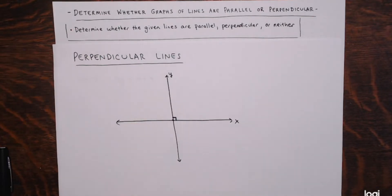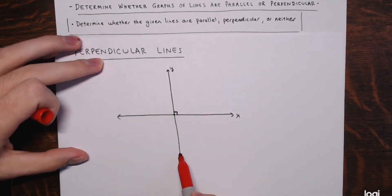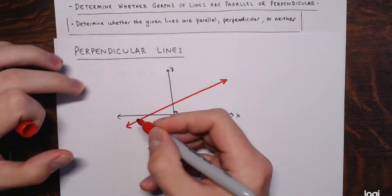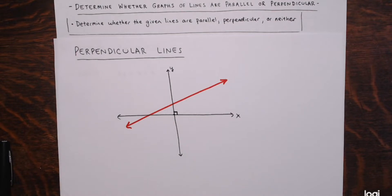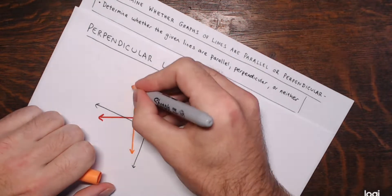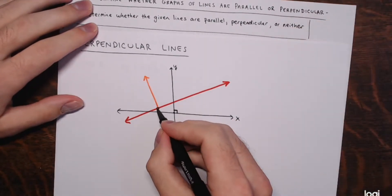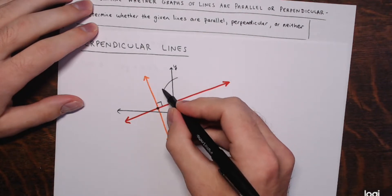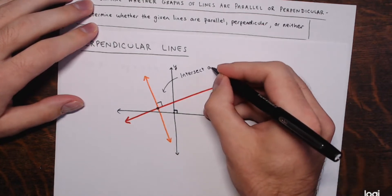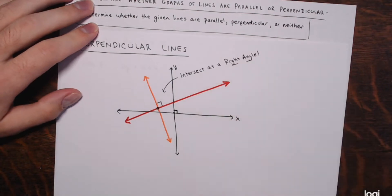Lines don't have to be horizontal and vertical to be perpendicular. Any horizontal line and any vertical line are perpendicular. But here's a line drawn at an angle, and another line perpendicular to it — I'm trying to eyeball a 90-degree angle here. They meet at a 90-degree angle; they intersect at a right angle.